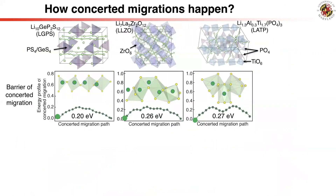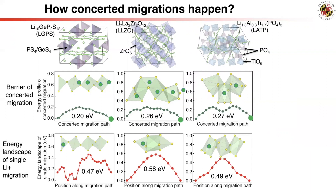We further investigated the energy barriers of multi-ion migration using NEB methods. For the concerted migrations observed from AIMD simulations, multiple ion migration indeed shows barriers as low as 0.2 eV, in agreement with experiments. As a comparison, single lithium-ion migration shows a much higher barrier of about 0.5 to 0.6 eV in the same materials.